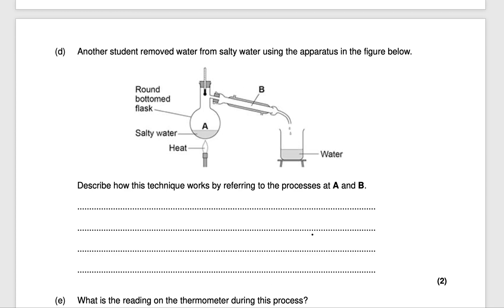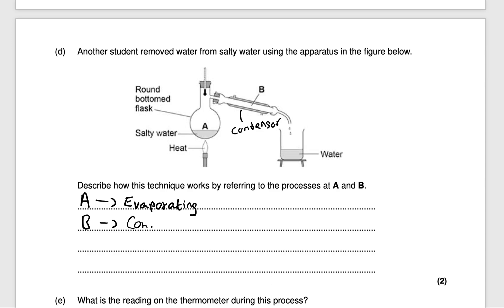Another student removed water from salty water using the apparatus in the figure — describe how this technique works by referring to processes at A and B. At A, we're heating the salty water, so we're evaporating the water — it becomes a gas. At B, we need to condense that gas so it turns back into liquid form, and that's the purpose of the condenser. So process A is evaporating and process B is condensing. That would get you two marks.